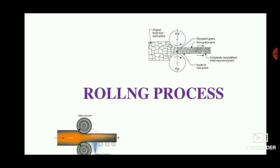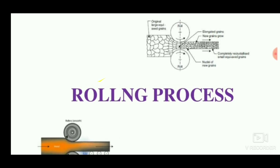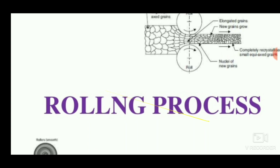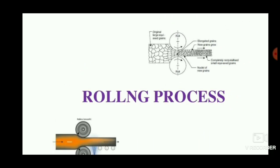Hello viewers, welcome to Engineering Study Materials. Today we are going to discuss about the rolling process. Generally rolling is a process that turns the cast ingot into a fine sheet. There are two types of rolling: hot rolling and cold rolling. During the rolling process, the grain size changes from large size grains into fine grains.